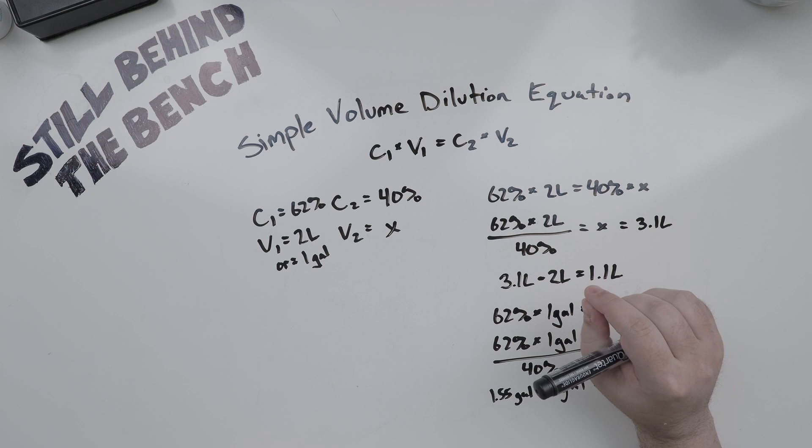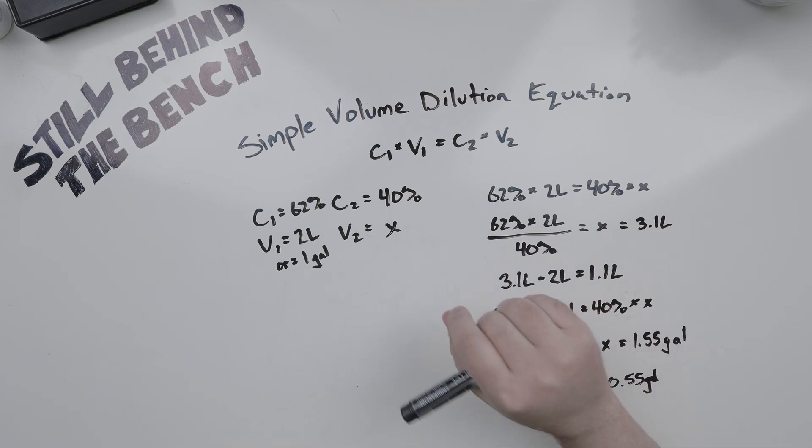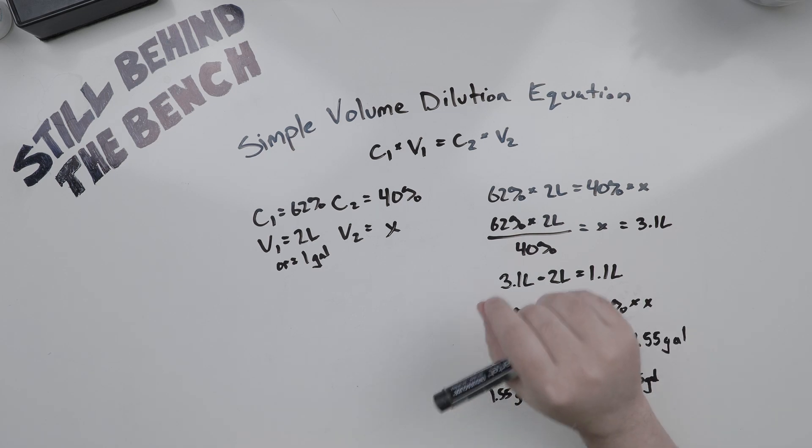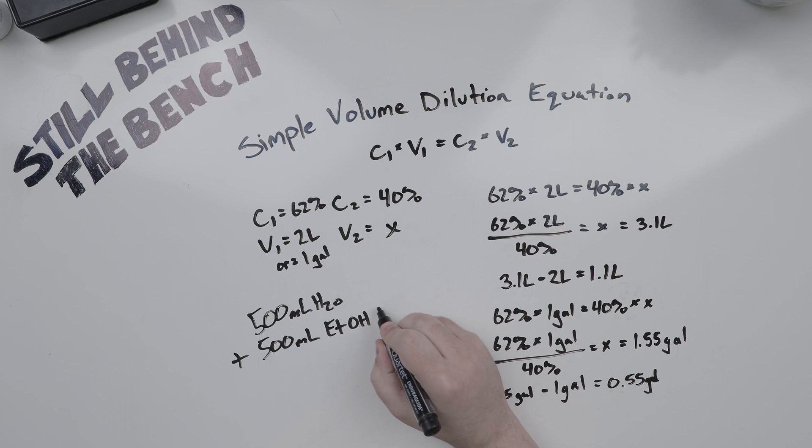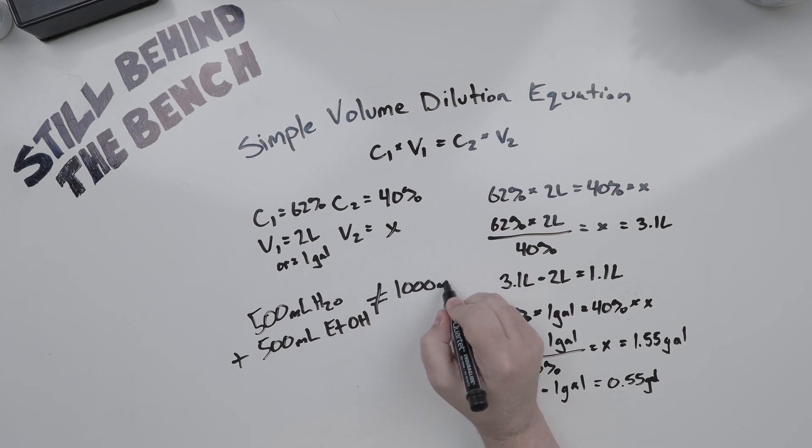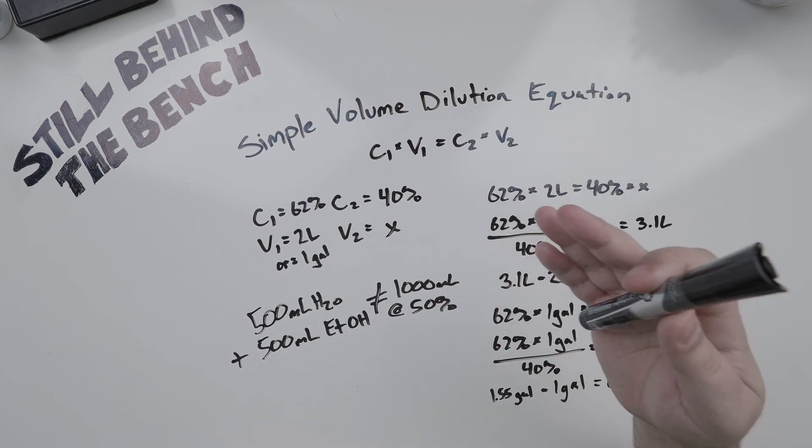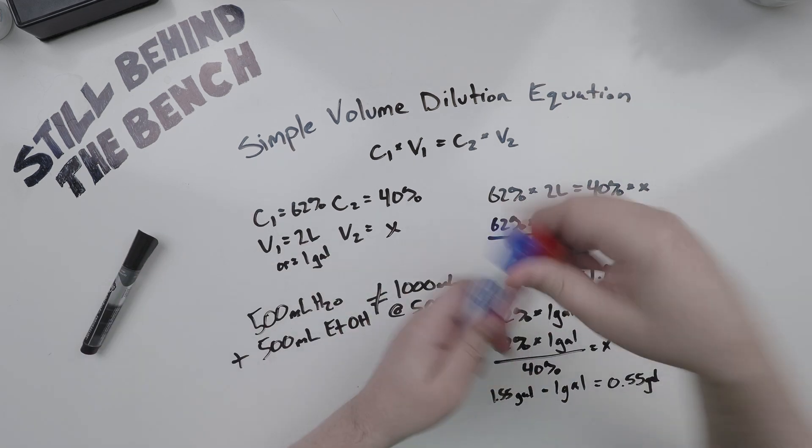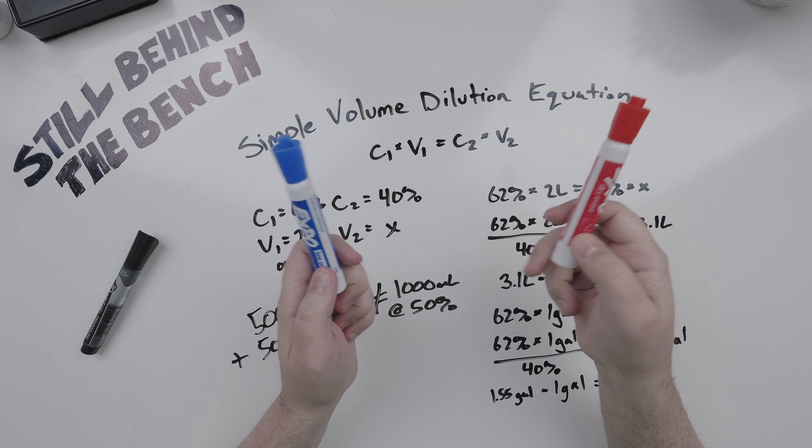But this is where the complicated part comes in. It doesn't take into account that water and ethanol undergo significant hydrogen bonding, and thus their mixed volume isn't the same as the sum of their volumes. Adding 500 milliliters of water to 500 milliliters of ethanol doesn't give you 1,000 milliliters of 50% ABV solution.